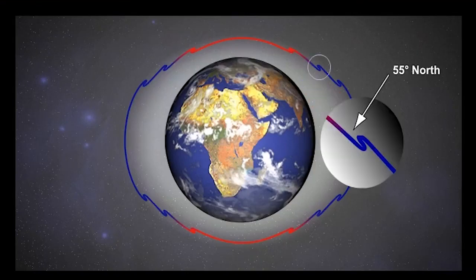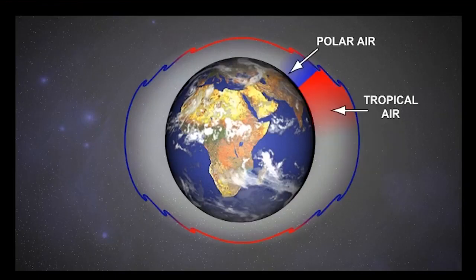The second tropopause break is at higher latitudes of about 55 degrees, where polar air meets tropical air. This happens along the polar front, which we'll talk about much later on. Again, there's enough of a temperature difference within the troposphere to cause a tropopause height change.